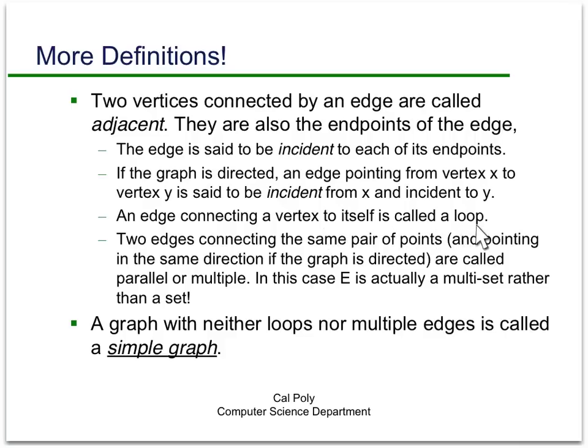We won't use this terminology too much, but the main point here is that the edge points from x to y. An edge connecting a vertex to itself is called a loop, and this can happen either in a directed or an undirected graph. Two edges connecting the same pair of points and pointing in the same direction, if the graph is directed, are called parallel or multiple. In this case, E is actually a multi-set rather than a set. This won't happen too much in this course, but it is important and does occur in many applications. A graph with neither loops nor multiple edges is called a simple graph, and that's what we will mostly be dealing with. So there won't be multiple edges between two vertices, and there won't be a loop that just loops around and comes back to where it started.